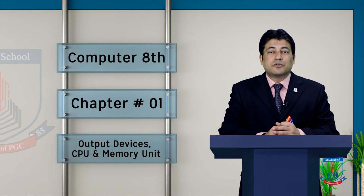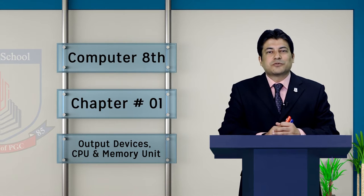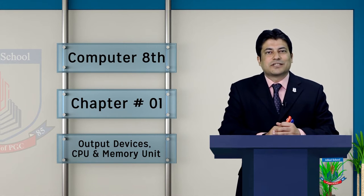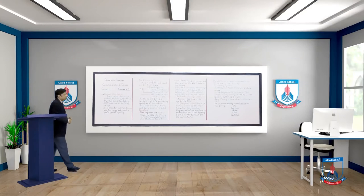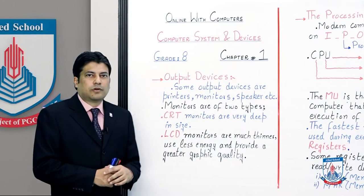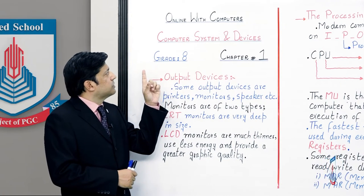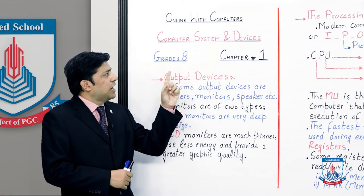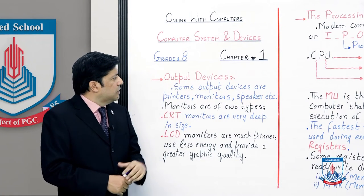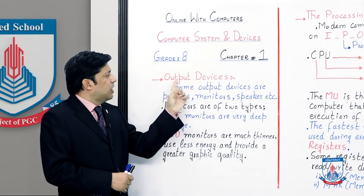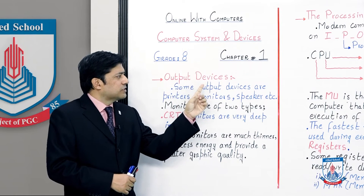Then we will talk about CPU and memory unit. Today we will start the lecture formally. This is Chapter 1, which is named Computer Systems and Devices. Today we will start with output devices.